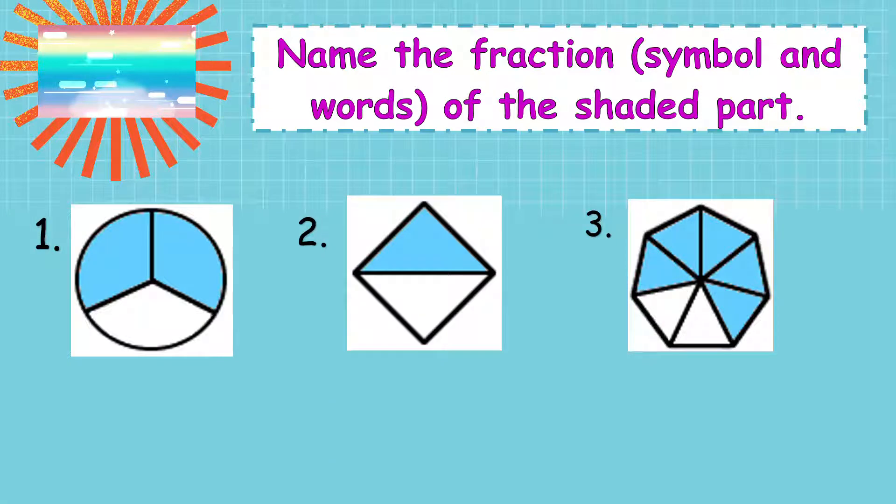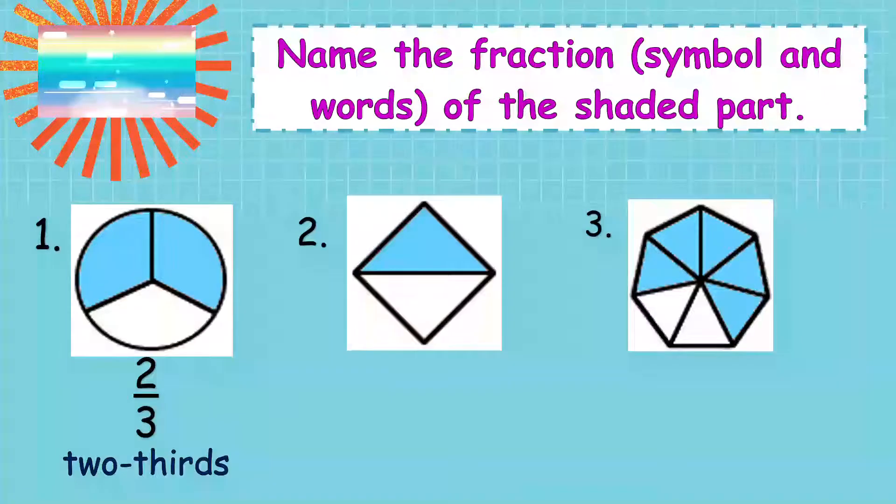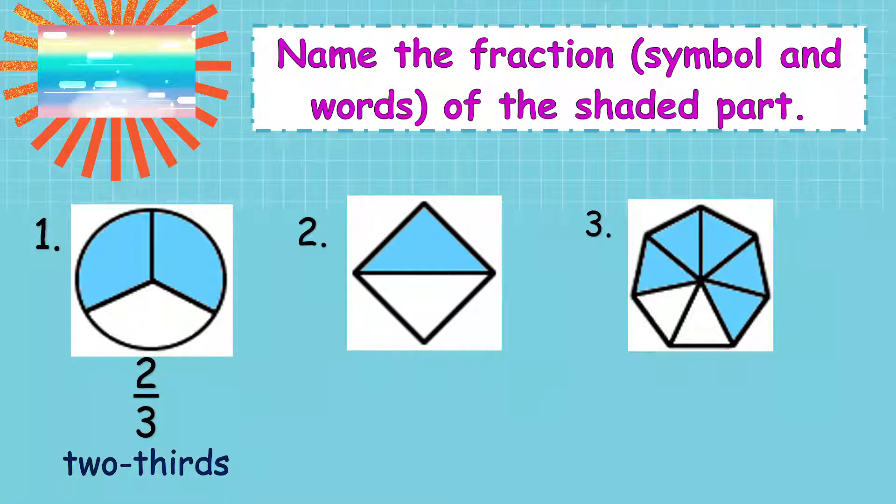Show me your answer or check your answer if it's correct. For number one, yes, there are two shaded parts. So, two and then three, that's the denominator. So, we say two-thirds with S because there are more than one, right?